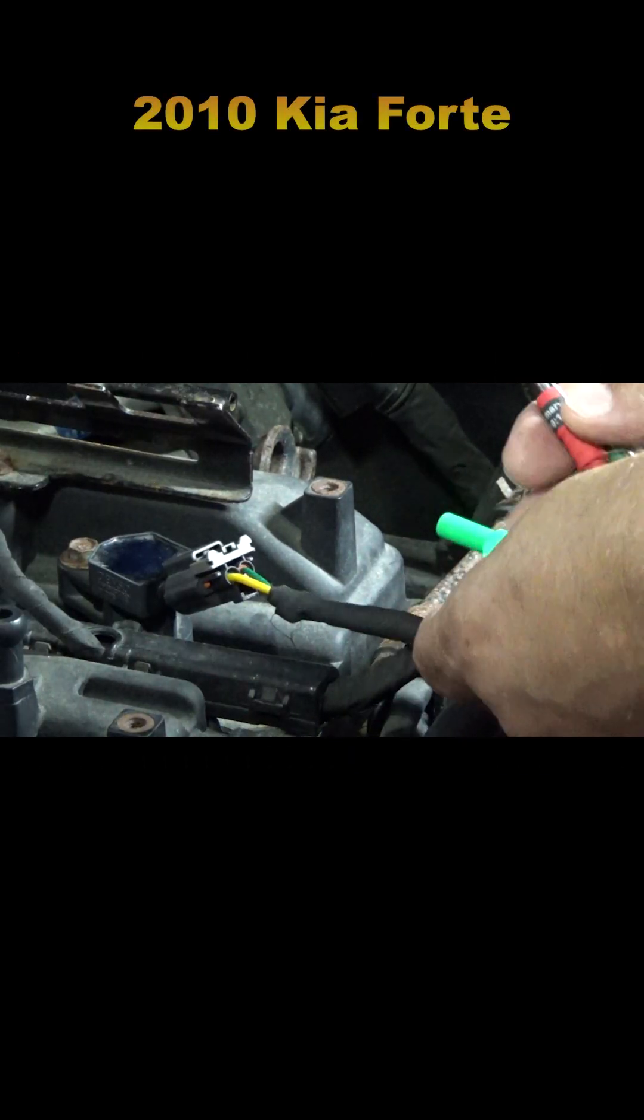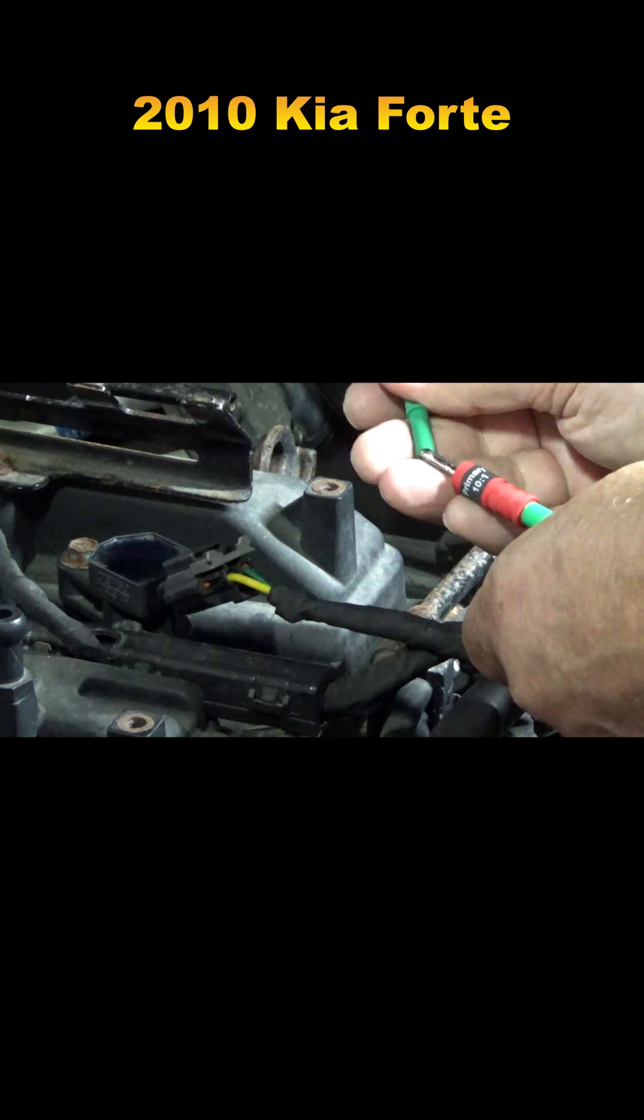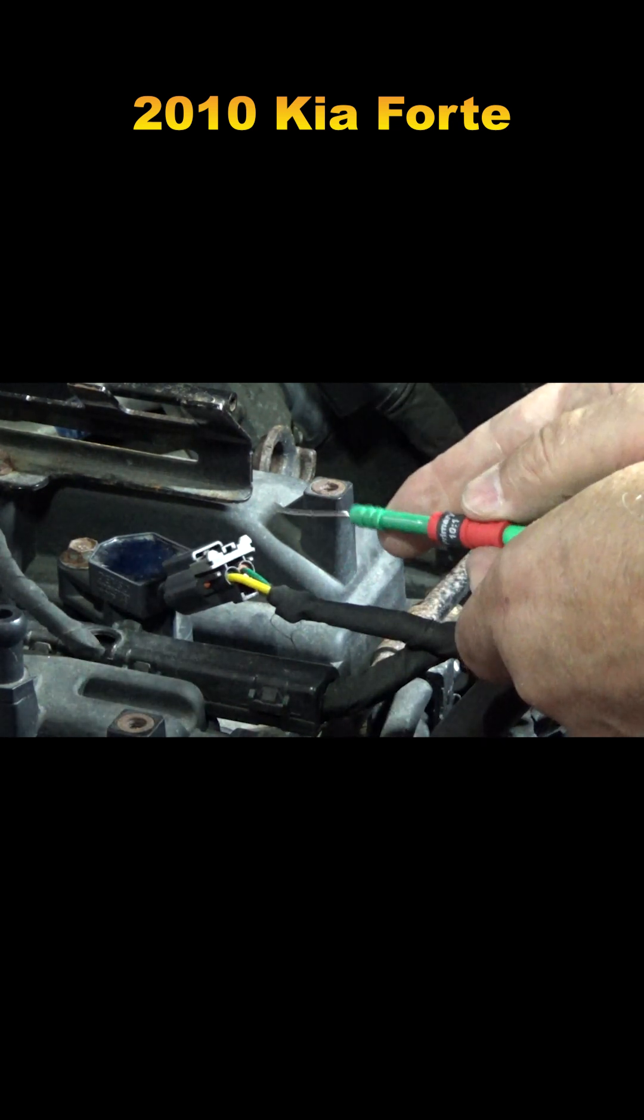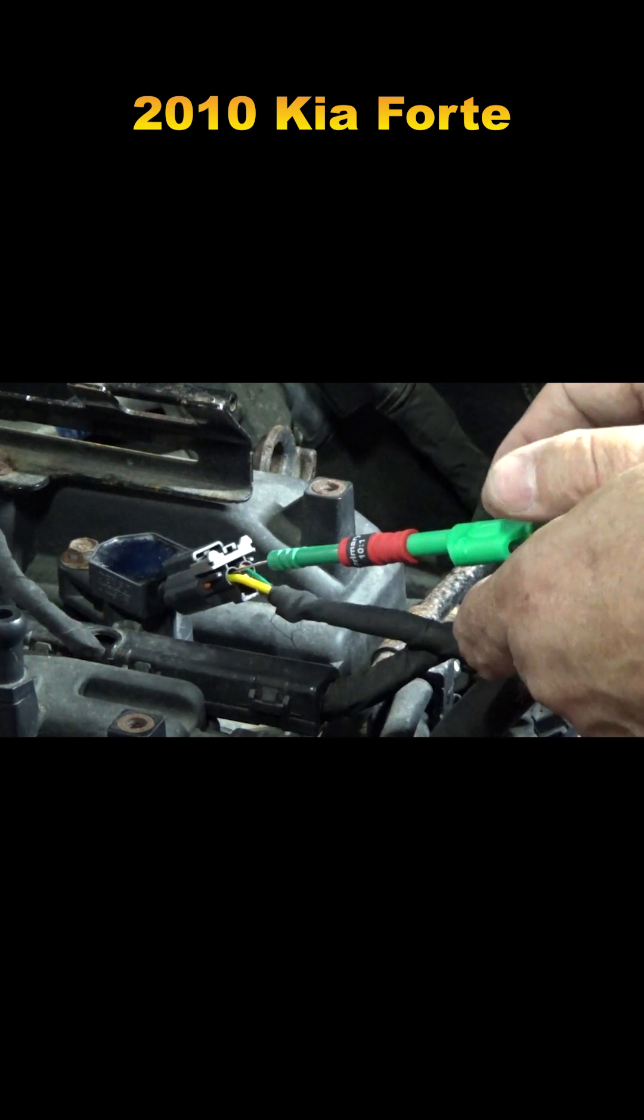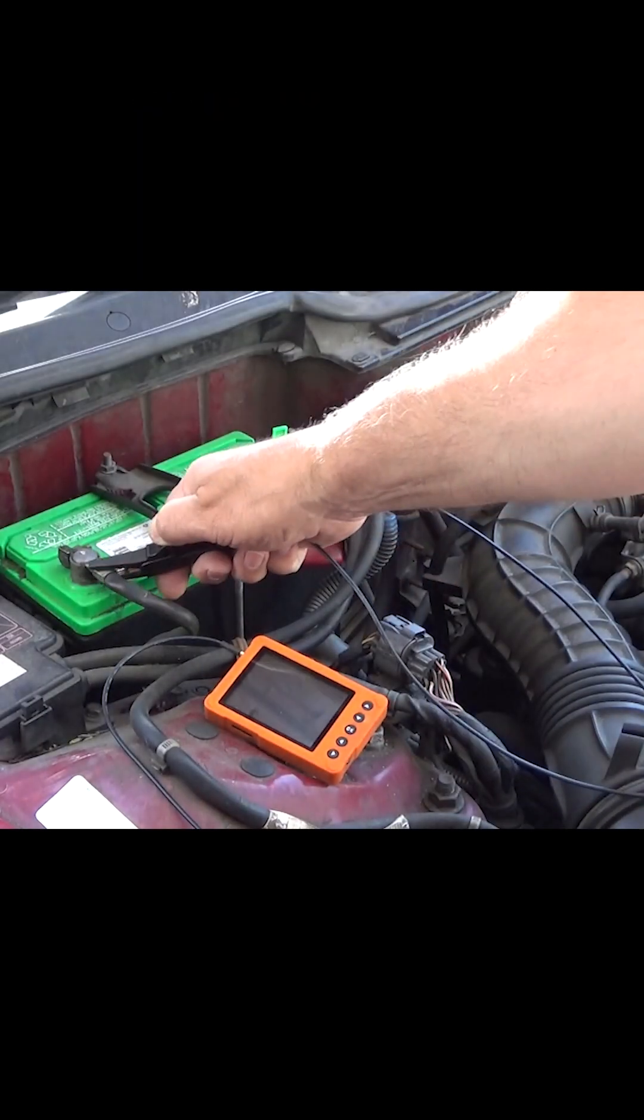Connect the 10 to 1 attenuator to the probe lead. Connect the back probe connector to the attenuator. Carefully back probe the coil primary ignition trigger wire. Connect the ground lead to a good ground.